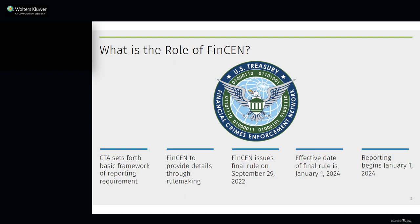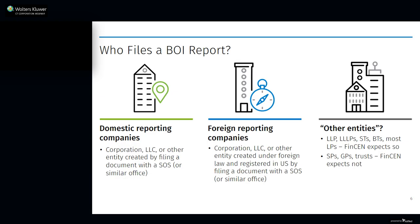FinCEN still has two more final rules that it's required by the CTA to write: one on who has access to the reported information — for which FinCEN issued a proposed rule last month — and another amending the customer due diligence rule imposed on financial institutions by the Bank Secrecy Act. FinCEN is also responsible for drafting the forms that will be used to report this information, which will have to be submitted electronically. They published their proposed BOI report and FinCEN identifier application forms for public comment just last week.